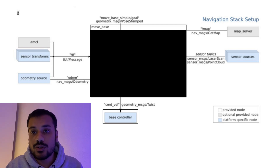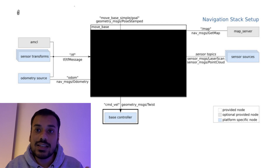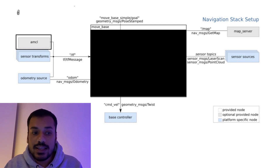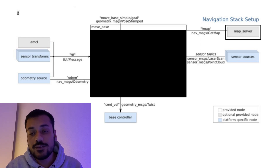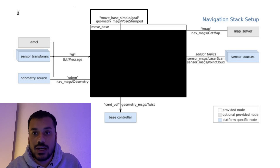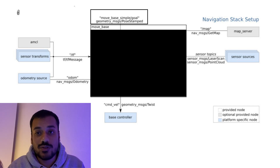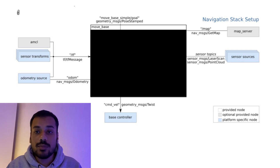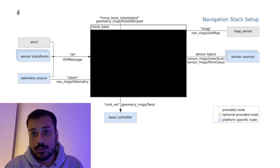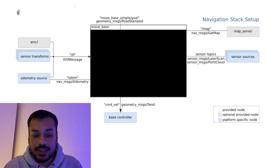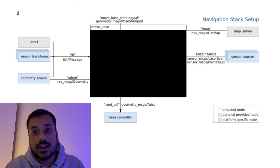Fourth, base controller: this takes in output velocity commands from MoveBase so the robot can move. Fifth, AMCL, which is optional — if you're using a map, AMCL or any global localization method is needed to get the transformation between map and odometry. Sixth, map server, also optional — if using a map, map server provides that map to MoveBase. Navigation can be initialized with or without a static map. With a static map, global planning uses it; without one, MoveBase makes optimistic plans for unseen areas and replans as it encounters new obstacles.